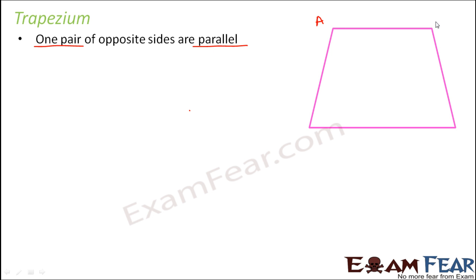So which are the two sides which are parallel here in this trapezium ABCD? Here if you see AB is parallel to CD. So they are not equal but they are parallel. Whereas the other pair of opposite sides are not parallel.